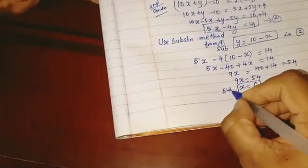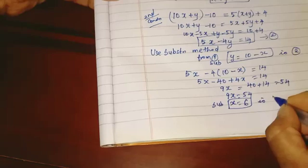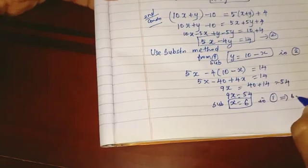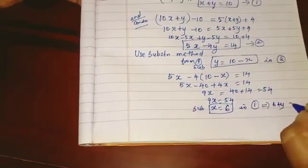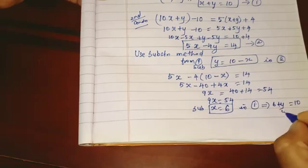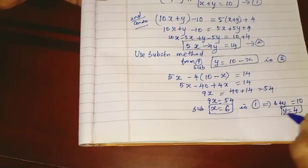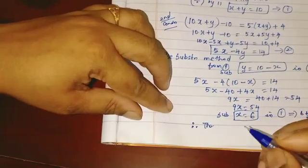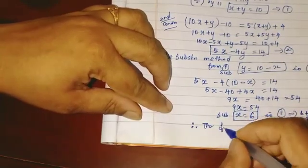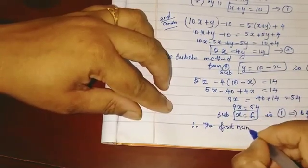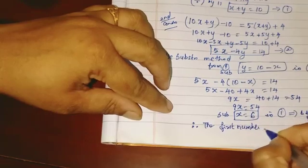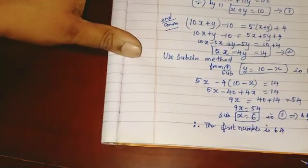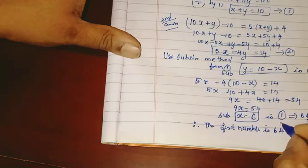Substitute x equals 6 in the first equation. Now, 6 plus y equals 10, so y equals 4. Therefore, find the first number. The first number is xy, which equals 64. This is the answer.